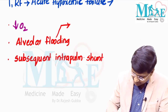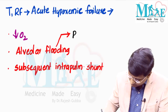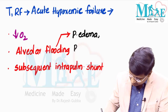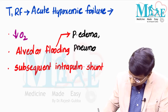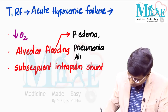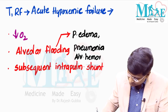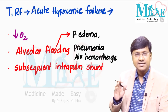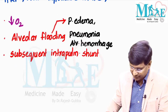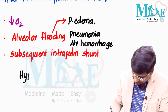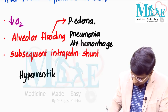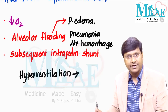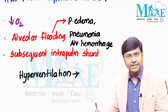The causes of alveolar flooding include: number one, pulmonary edema; number two, pneumonia; and number three, alveolar hemorrhage. Because of alveolar flooding or intrapulmonary shunt, the individual lands up in hypoxia. This triggers the chemoreceptors, which stimulate the respiratory centers to increase the respiratory rate, resulting in hyperventilation and CO2 washout.